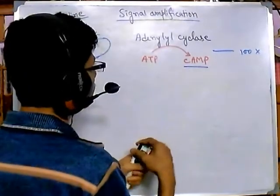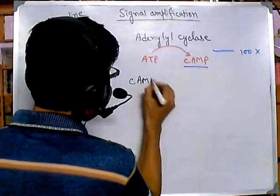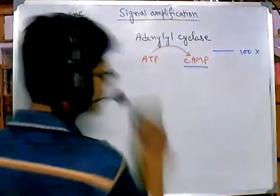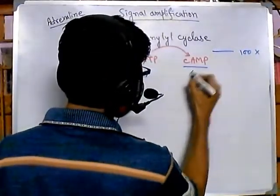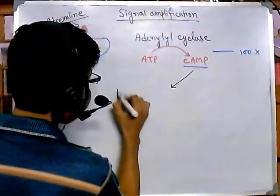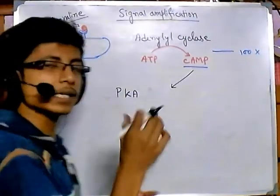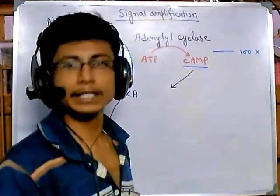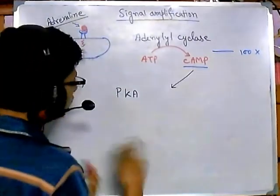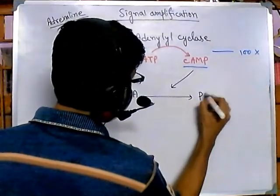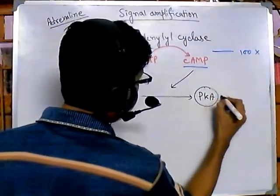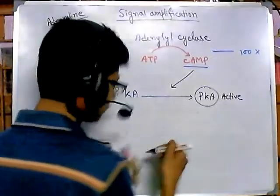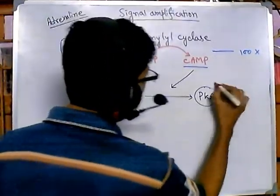Each of those cyclic AMP molecules is now going to activate Protein Kinase A. Kinases are enzymes that phosphorylate different proteins. Each cyclic AMP activates 100 Protein Kinase A molecules — so here also there is a 100-fold increase.